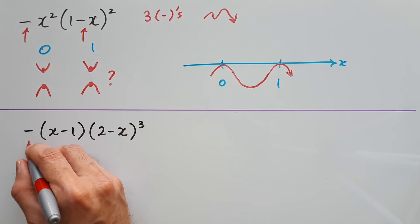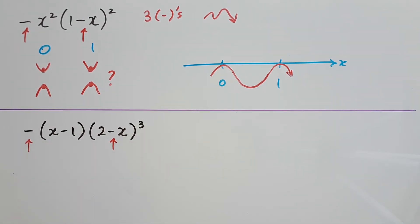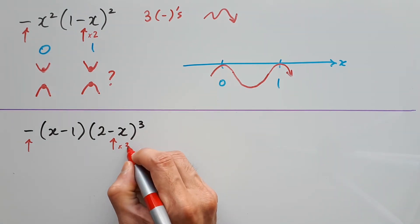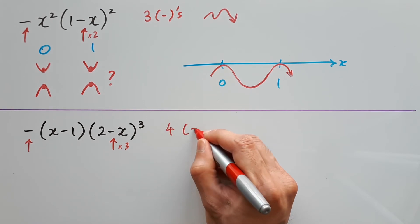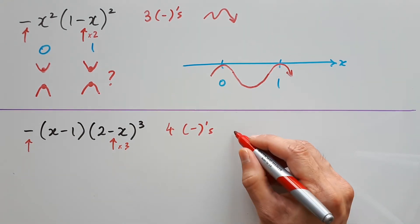For this next question, we have a negative on the outside as well, but there is something different going on with 2 minus x. Because that factor is to the power of 3, just like in the previous question where we had two repetitions of that negative inside, this one has three repetitions. So in total there are four negatives here. And four negatives put together makes a positive, so this graph will finish upward.